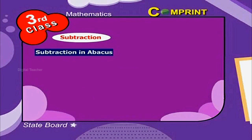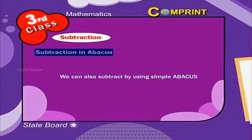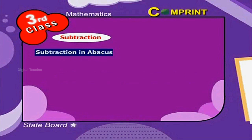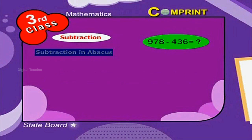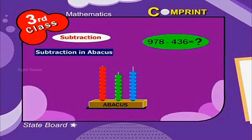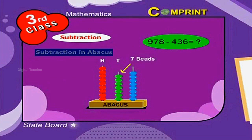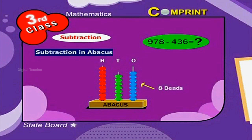Subtraction using simple abacus. We can also subtract by using simple abacus. For example, 978 minus 436. In the above picture, abacus we see 9 beads in 100's place, 7 beads in 10's place, 8 beads in 1's place.